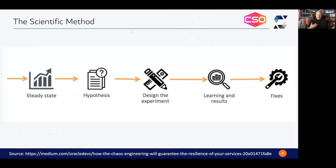First, we learn what the steady state of our system is — we understand what normal looks like. We then make a hypothesis: perhaps if we remove the network cable from the database server, our application will respond with errors in a timely manner, so they won't just sit there waiting for, say, the default eight-hour timeout on some MySQL connection parameters. We design the experiment to test that specific condition, then learn from the results and perhaps make fixes, because maybe it doesn't go the way we thought.